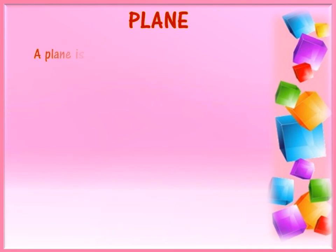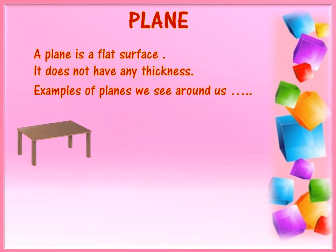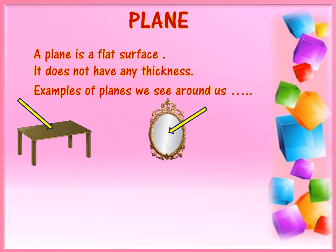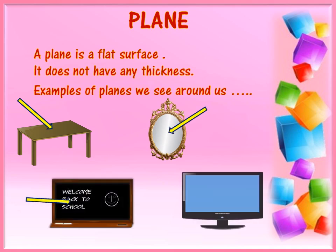A plane is a flat surface and it does not have any thickness. Examples of planes that we see around us are the top of a table, the surface of a mirror, the surface of a blackboard or the screen of a television.